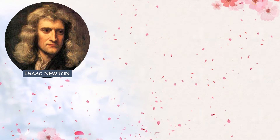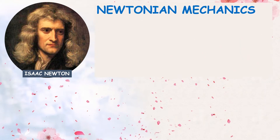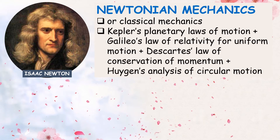Long before the development of the special theory of relativity, there were two great theories of physics: the theory of electromagnetics developed by James Clerk Maxwell and the three laws of motion by Isaac Newton. In 1687, Newtonian mechanics, also called classical mechanics, combined into one the theory of Kepler's planetary laws of motion, Galileo's law of relativity for uniform motion, Descartes' law of conservation of momentum, and Huygens' analysis of circular motion.